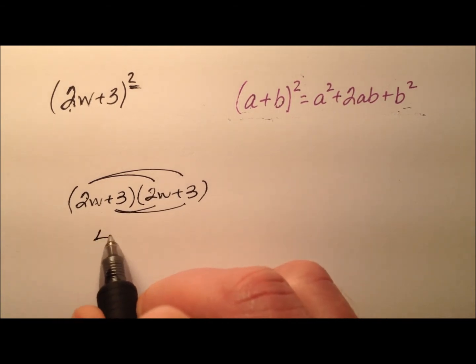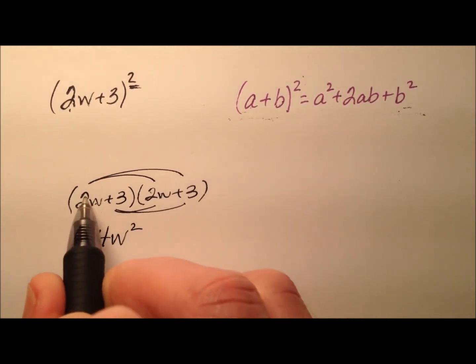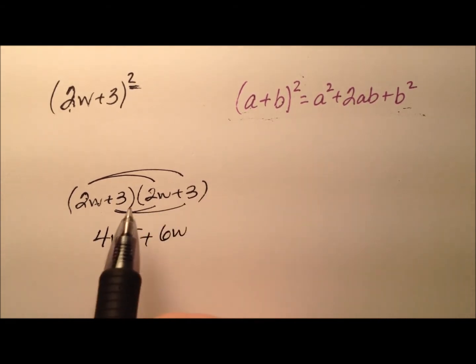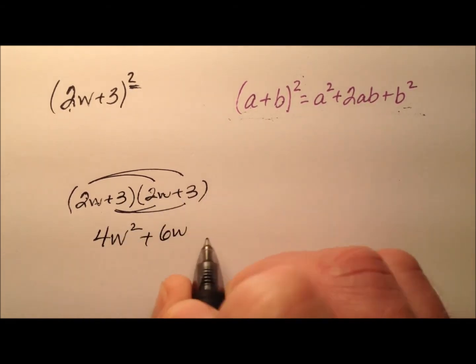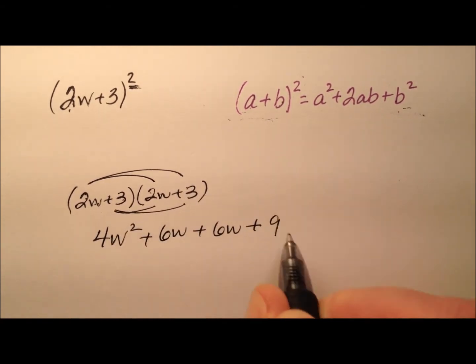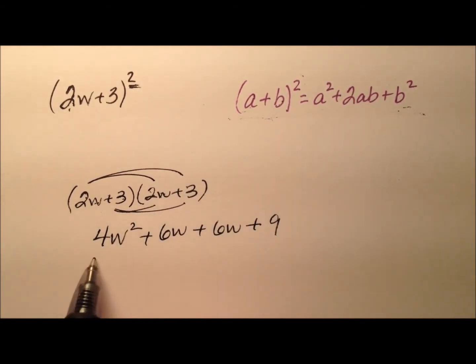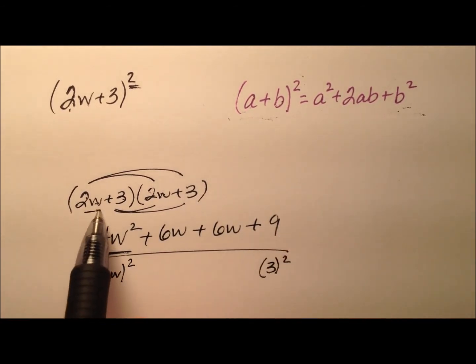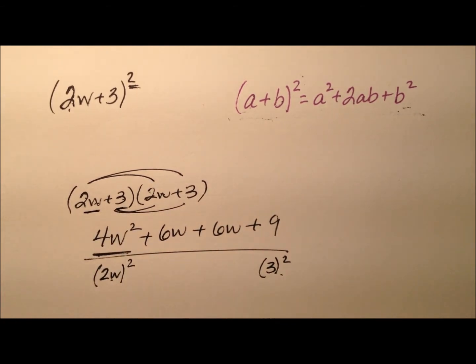So 2w times 2w makes 4w squared, and then 2w times positive 3 is plus 6w, and then 3 times 2w is another 6w, and then 3 times 3 is 9. So look carefully at these terms. Where did they come from? Well the 4w squared was the 2w squared right there, and the 9 was the 3 squared, so that was the first term and the last term being squared.